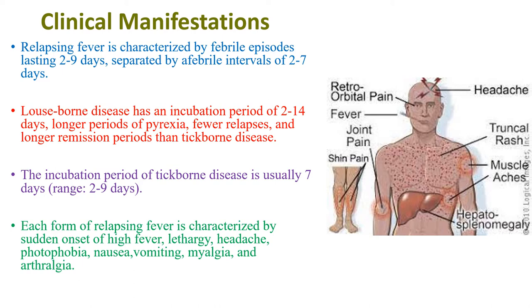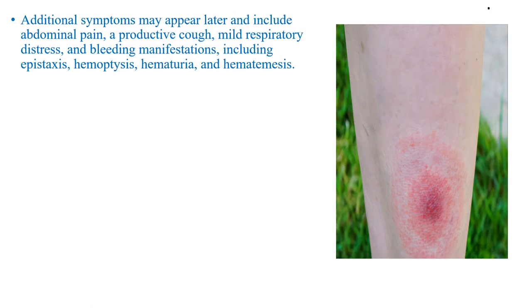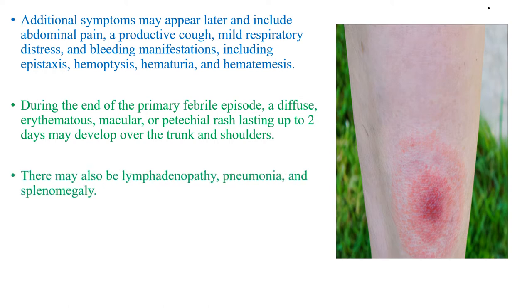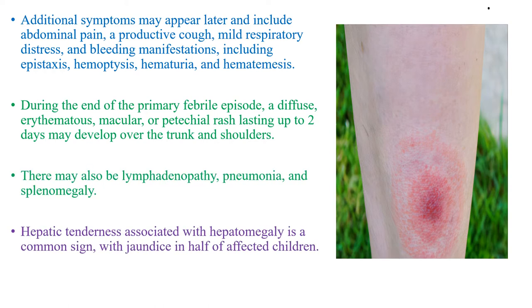There may also be other physical examination findings. Additional symptoms may appear later and include abdominal pain, productive cough, mild respiratory distress, and bleeding manifestations including epistaxis, hematuria, hemoptysis, and hematemesis. During the end of the primary febrile episode, a diffuse erythematous macular or papular rash lasting up to 2 days might develop over the trunk and the shoulders. There might also be lymphadenopathy, pneumonia, and splenomegaly.